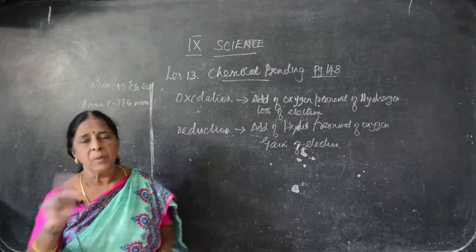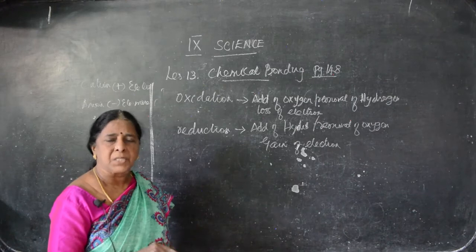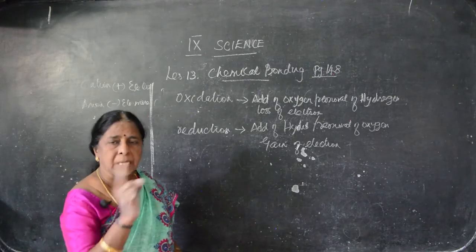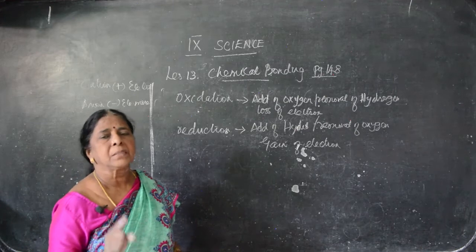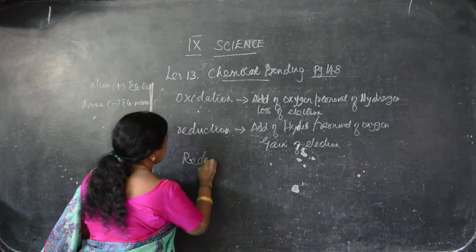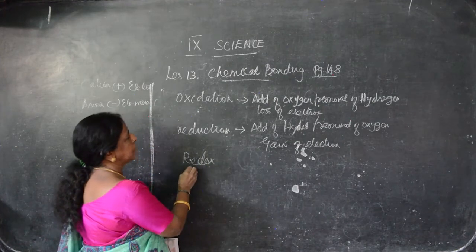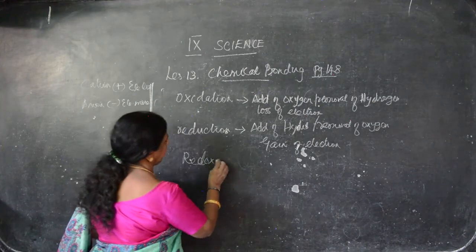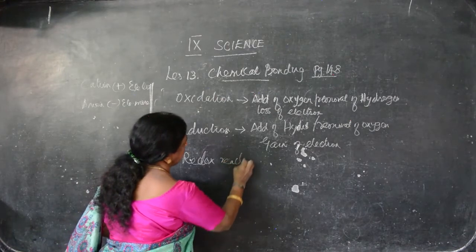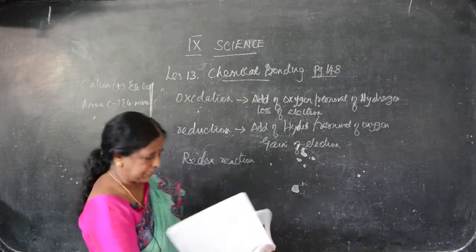In some reactions, both will occur simultaneously — oxidation on one side, reduction on the other — both occur together. That kind of reaction is known as redox reaction, that is reduction as well as oxidation — redox reaction. Both will occur simultaneously.